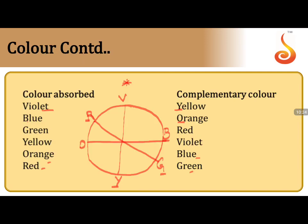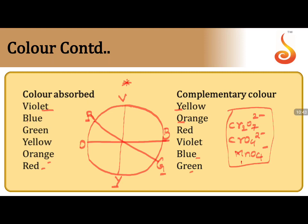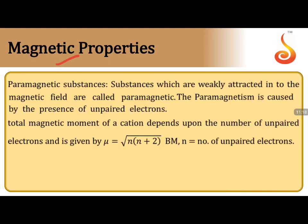There are exceptions to the unpaired-electron rule for color. Species like Cr₂O₇²⁻, CrO₄²⁻, and MnO₄⁻ have no unpaired electrons in their valence shell, yet they exhibit color. The reason for this phenomenon is charge transfer — these species (dichromate, chromate, and permanganate) show color due to charge transfer phenomena despite having no unpaired electrons.